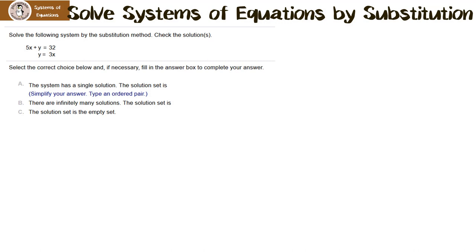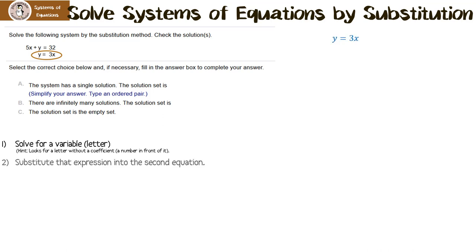Solve the following system by the substitution method. Check the solutions. The first thing we have to do is solve for a letter — we want to get y by itself or x by itself. In this case we're super lucky because we have y equals 3x, so we've already solved for a variable. The next thing we're going to do is substitute that expression into the second equation. What it means to substitute is y equals 3x, so I'm going to put 3x in for y.